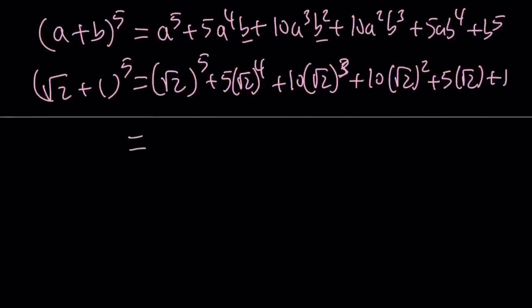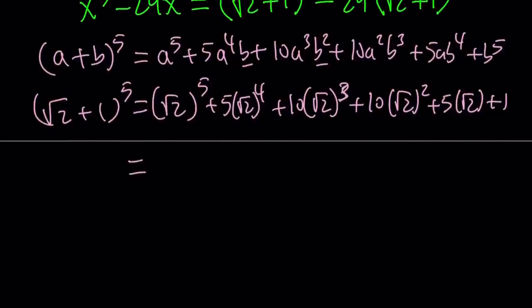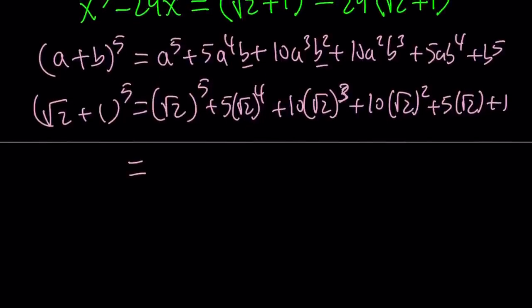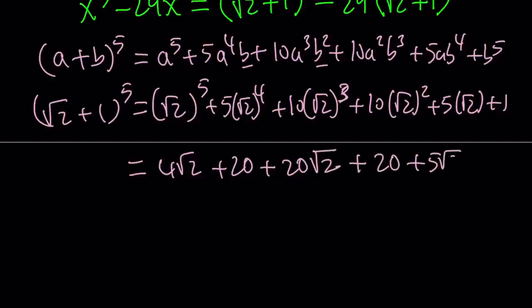Let's go ahead and simplify this first, and now we're going to subtract from it 29 times square root of 2 plus 1. How do you raise square root of 2 to the 5th power? You can square, square, and then multiply by root 2. That is going to give you 4 root 2. This is going to be 20. This is 20 root 2, this is going to be 20, this is 5 root 2, and this is 1.